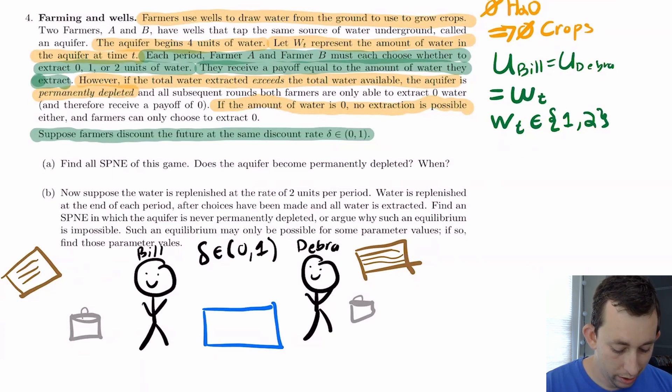However, if the total water extracted exceeds the total water available, that means for example, you try to pull out four buckets worth of water, but there's only two buckets worth of water in the aquifer, then that aquifer is permanently depleted, you've absolutely destroyed it, and it's not coming back. So then all subsequent rounds, Bill and Debra can only extract zero, basically not a choice, there's just zero water. If the amount of water is exactly equal to zero, then you can't choose anything at all except for zero still. But notice that the aquifer is not permanently depleted, it's just dried up.